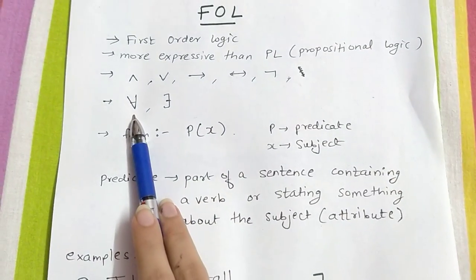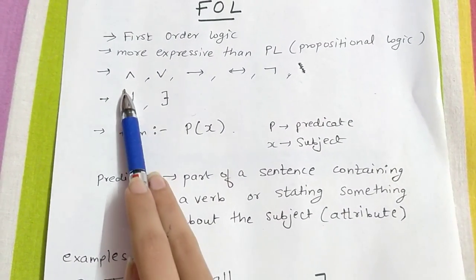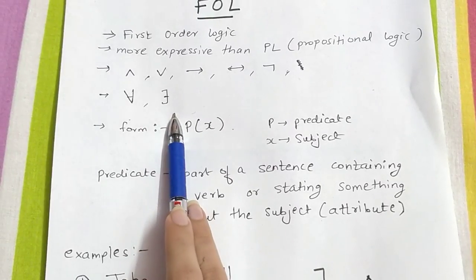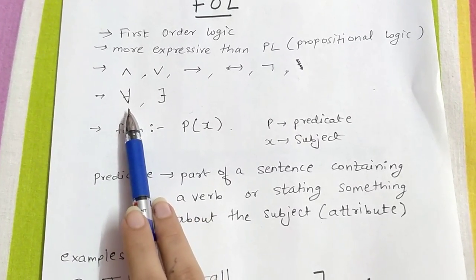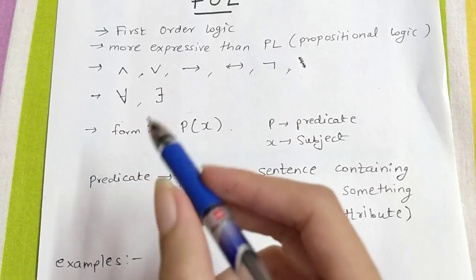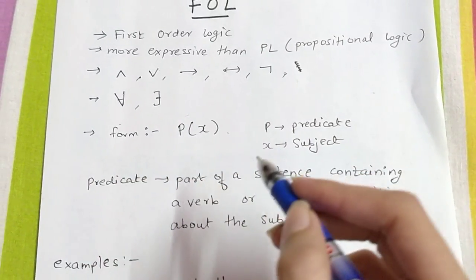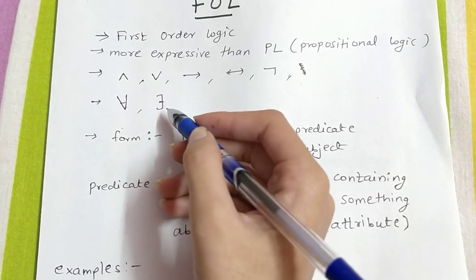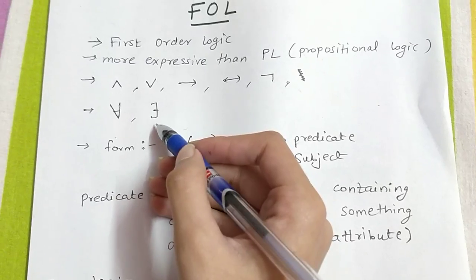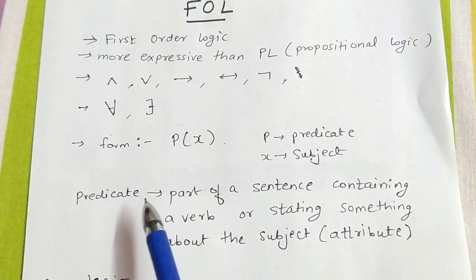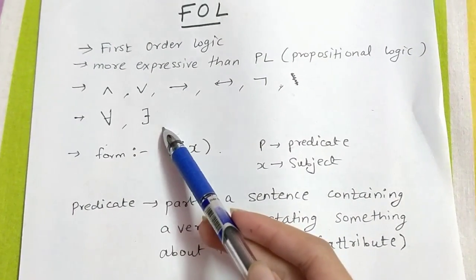But the additional thing that FOL has is quantifiers. That is, universal quantifier and existential quantifier. Universal means whenever we have a statement with 'all' or something like that. In existential we have words like 'some people' or 'some'. We will understand it when the examples come.